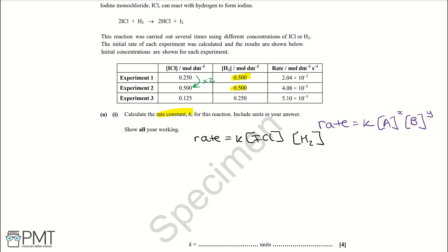When ICl doubles, the rate also increases by a factor of two — it doubles. That means it's first order with respect to ICl, because the change in rate matches the change in concentration. If it were second order, the rate would increase by two squared, or times four. If it were zero order, the rate would stay the same regardless of concentration changes.